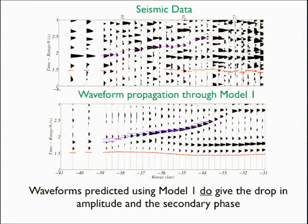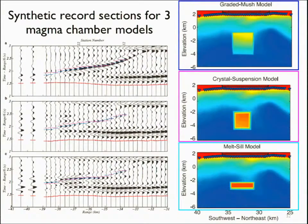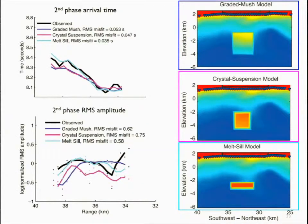Focusing in on that region of amplitude drop and the secondary arrival, this model much better reproduces some of these features in the data. This model is not unique, however — we played with three different geologically motivated models. The top one has a graded mush, the second one has crystals suspended throughout the magma body, and the last one is a purely molten sill. They all look a little bit different but have similar features. We tried to quantify the comparisons by looking at the arrival time of the secondary phase, the amplitude of the secondary phase, and the amplitude of the primary phase. When you look at the misfits for these quantities, we can't really distinguish between the models.